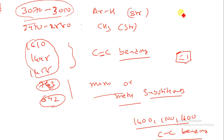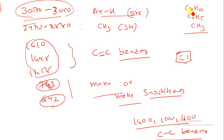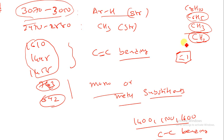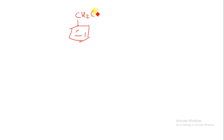Now let us combine everything. The given formula is C8H10, and we are getting aliphatic stretching as well as aromatic stretching. For aromatic, write C6H5; for aliphatic, write CH3. Then C8 minus C6 gives C2, and H10 minus H8 gives H2, so we get CH2CH3 as the remaining group.